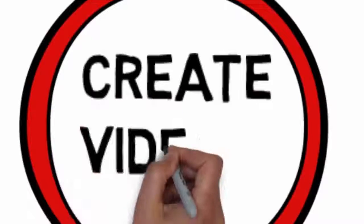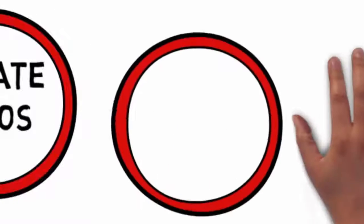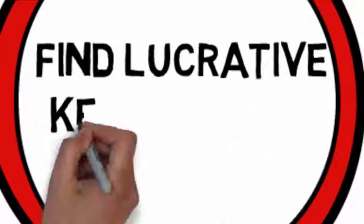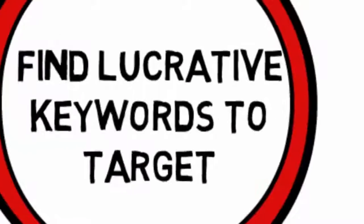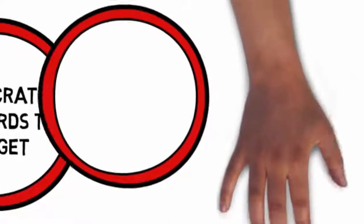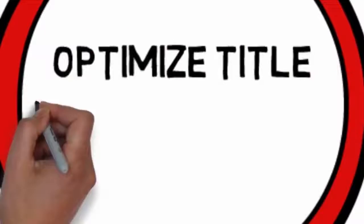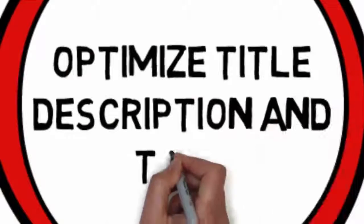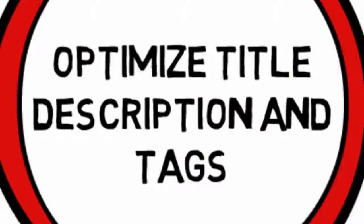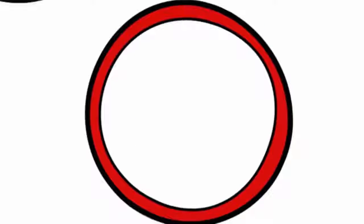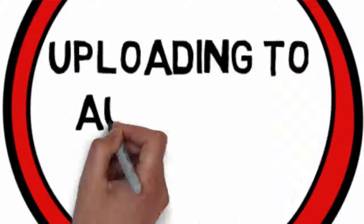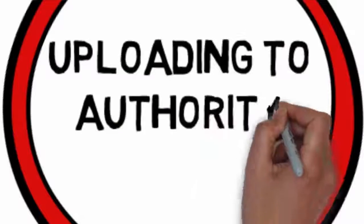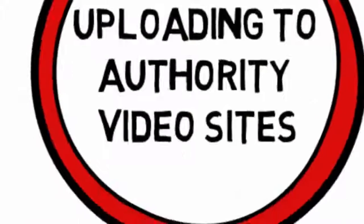Step 1: first you'll need to create the videos. Step 2: then you'll need to find lucrative keywords to target. Step 3: now you'll need to optimise video titles, video descriptions and video tags so that they're set for maximum exposure and optimum rankings. Step 4: now they'll need uploading to authority video sites so they're searchable and available online for viewing.